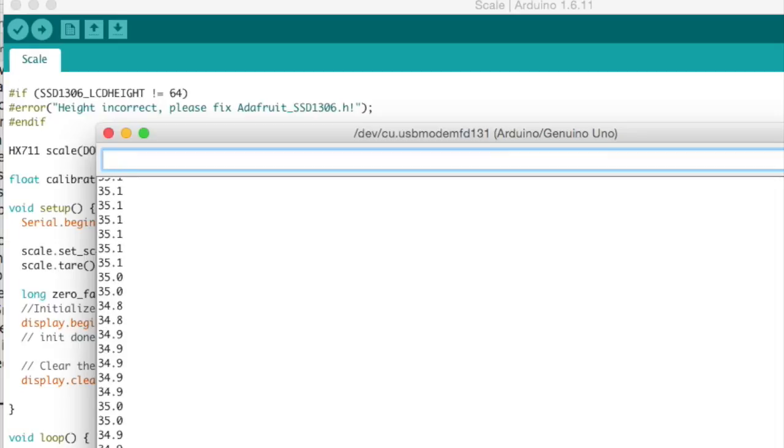I'm going to put my 35.2 pound weight on there. So it's 34.9, 35, 35.1, 35.2. That's pretty accurate. I'll just show you how it changes. Take that off.